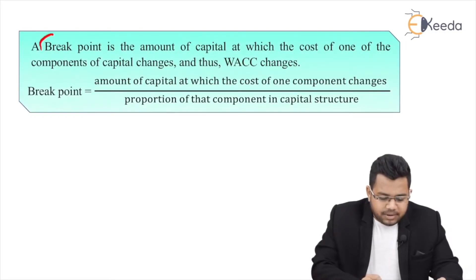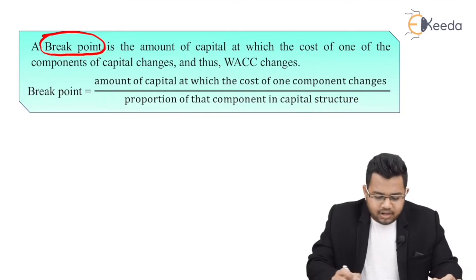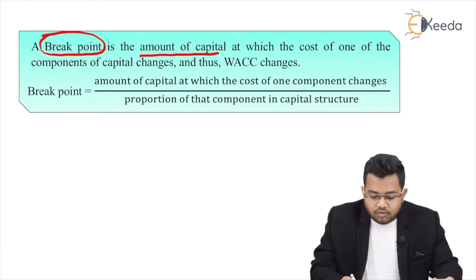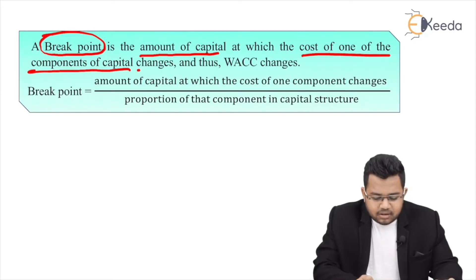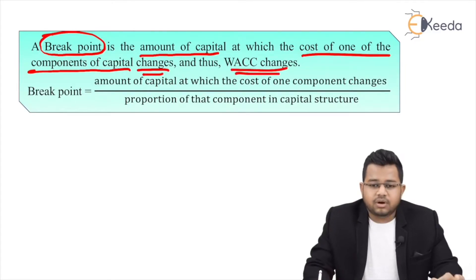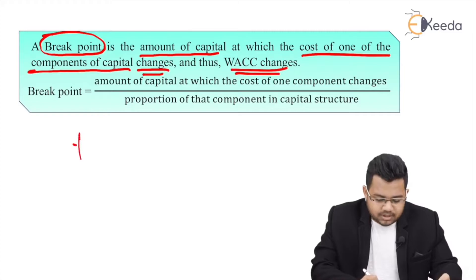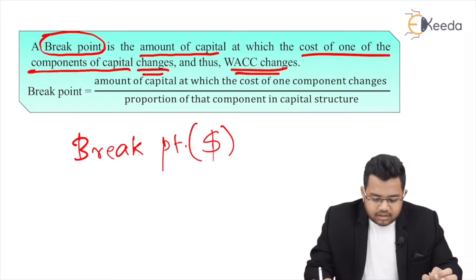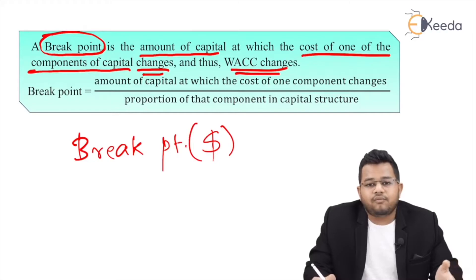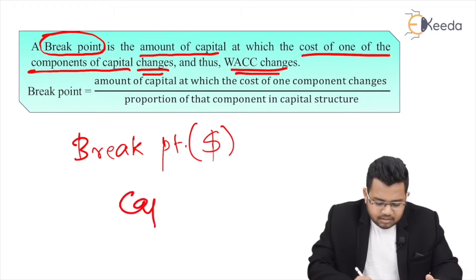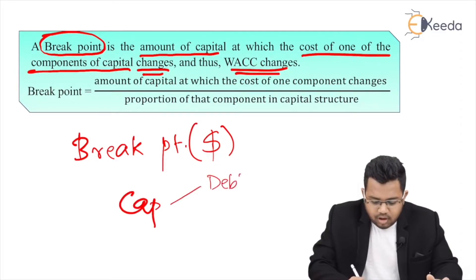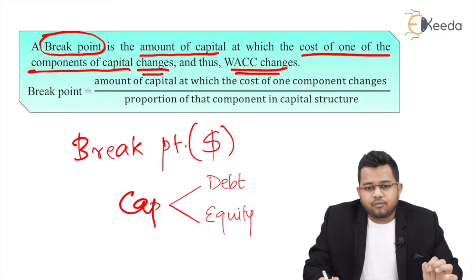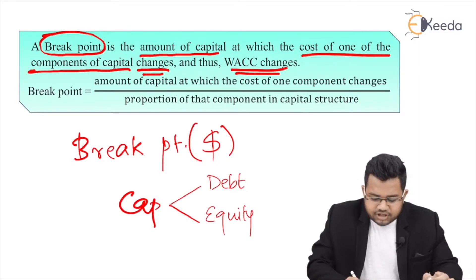The next concept is known as a breakpoint. A breakpoint is the amount of capital at which the cost of one of the components of capital changes, and thus WACC changes. Breakpoint is an amount — it will be in dollars. Capital might have two or three components; for simplicity, let's assume two components: debt and equity. The question is: at what amount will the cost of each component change?